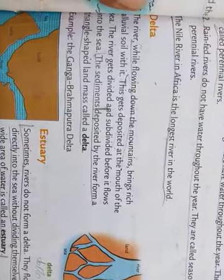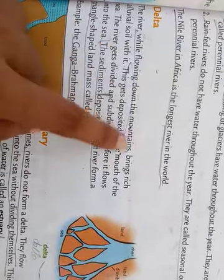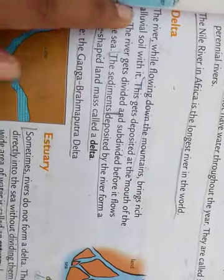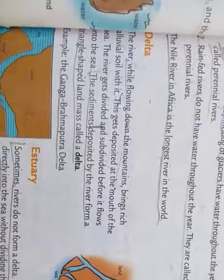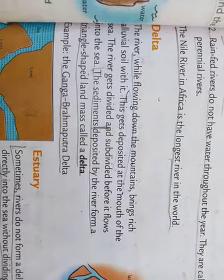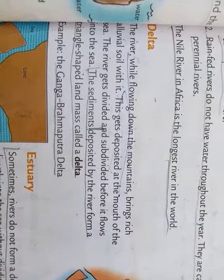The next landform is Delta. What is a Delta? Rivers, while flowing down the mountains, bring rich alluvial soil. This soil is deposited at the side of the sea. The rivers flowing down the mountains get divided before flowing into the sea and form a triangle-shaped land. This is called a Delta.